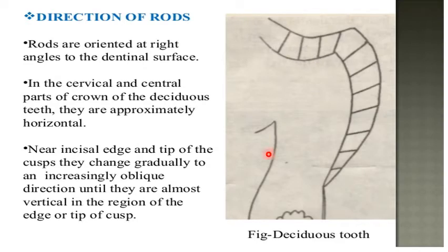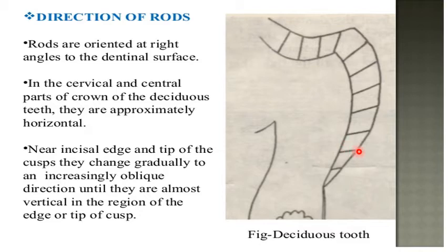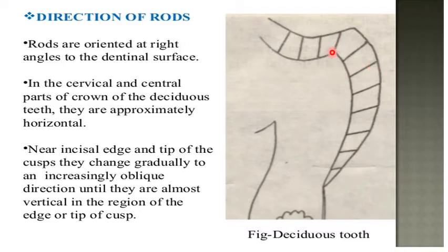Regarding the direction of the enamel rod: in deciduous teeth, rods are oriented at right angles to the dentinal surface. In the cervical and central part of the crown of deciduous teeth they are approximately horizontal. Near the incisal edge and tip of the cusp they change gradually to an increasingly oblique orientation, until they are almost vertical at the edge or cusp tip of the deciduous tooth.